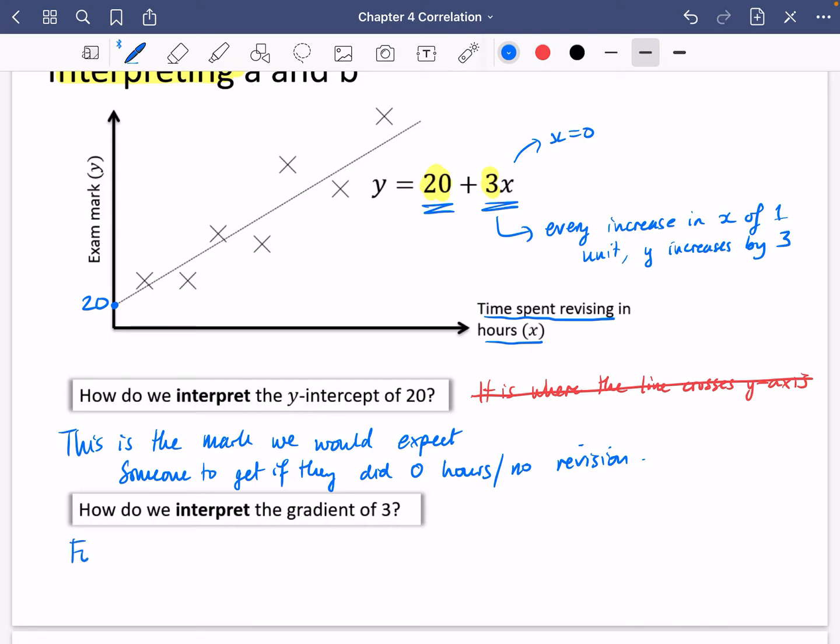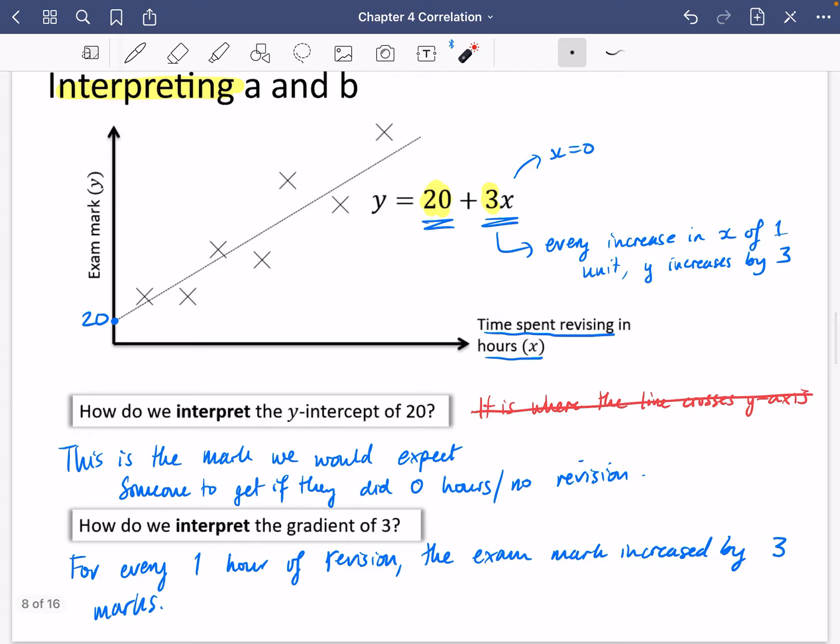It means for every one hour of revision, the exam mark increased by three marks. Because this is what it is in the context of the graph. Every time you move across one space for x, it goes up three for y. So every time you go one hour of revision, the exam mark increased by three marks. And that's it. So we need to do an interpretation of those values.